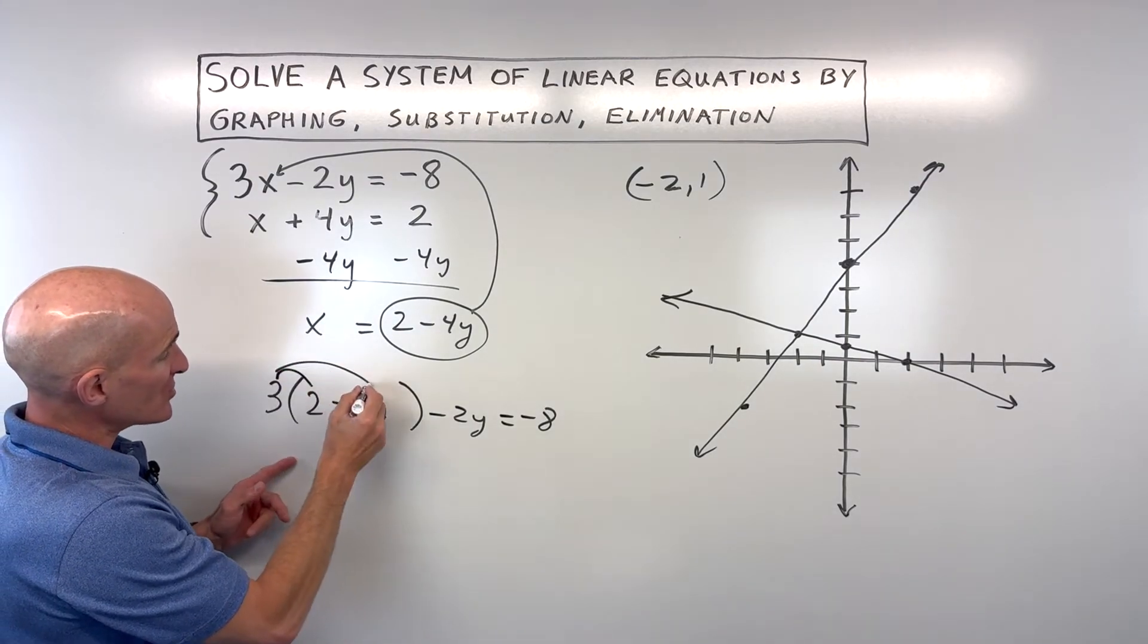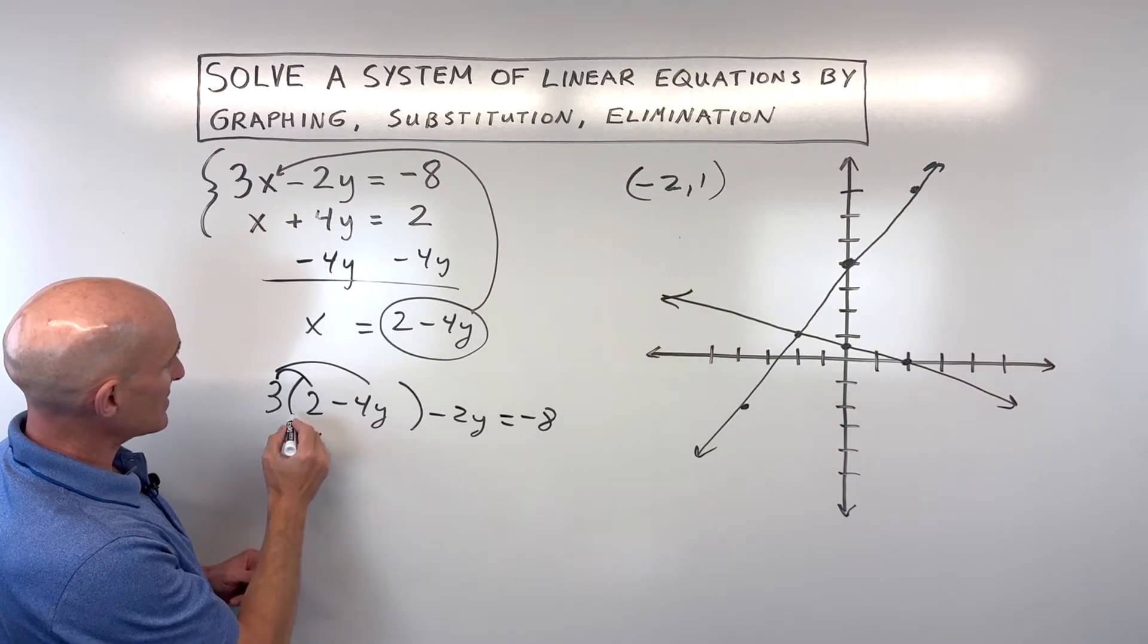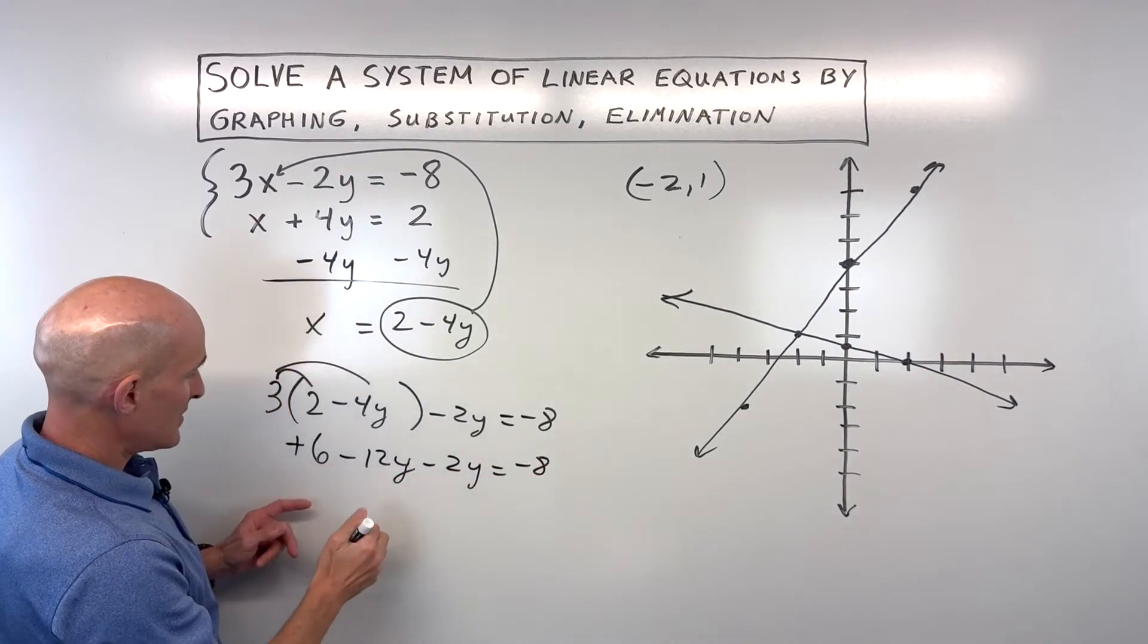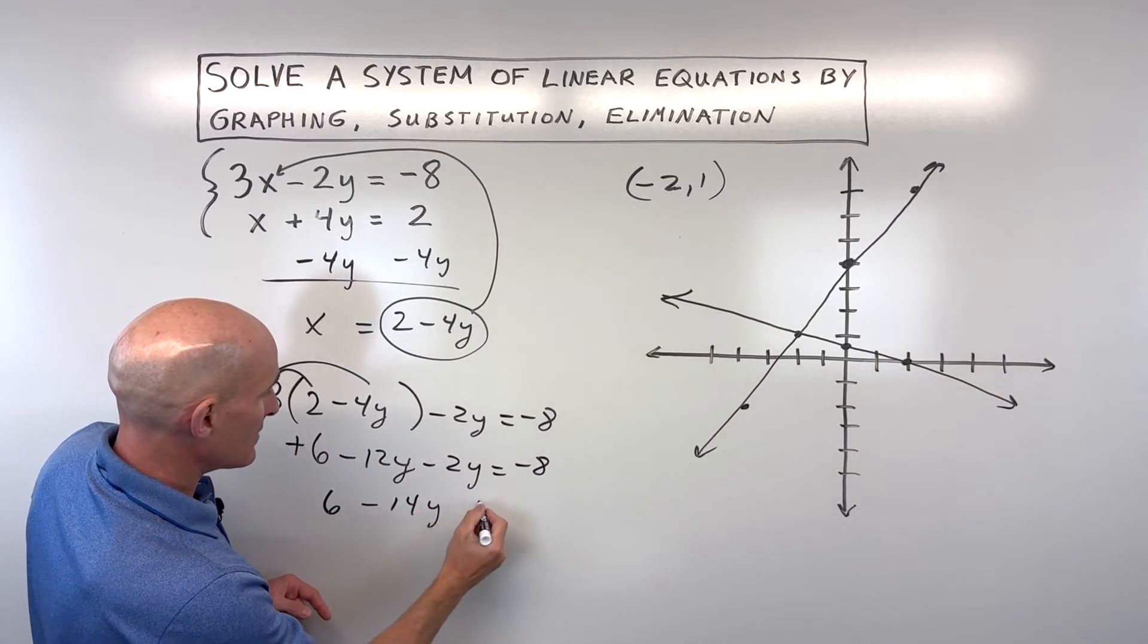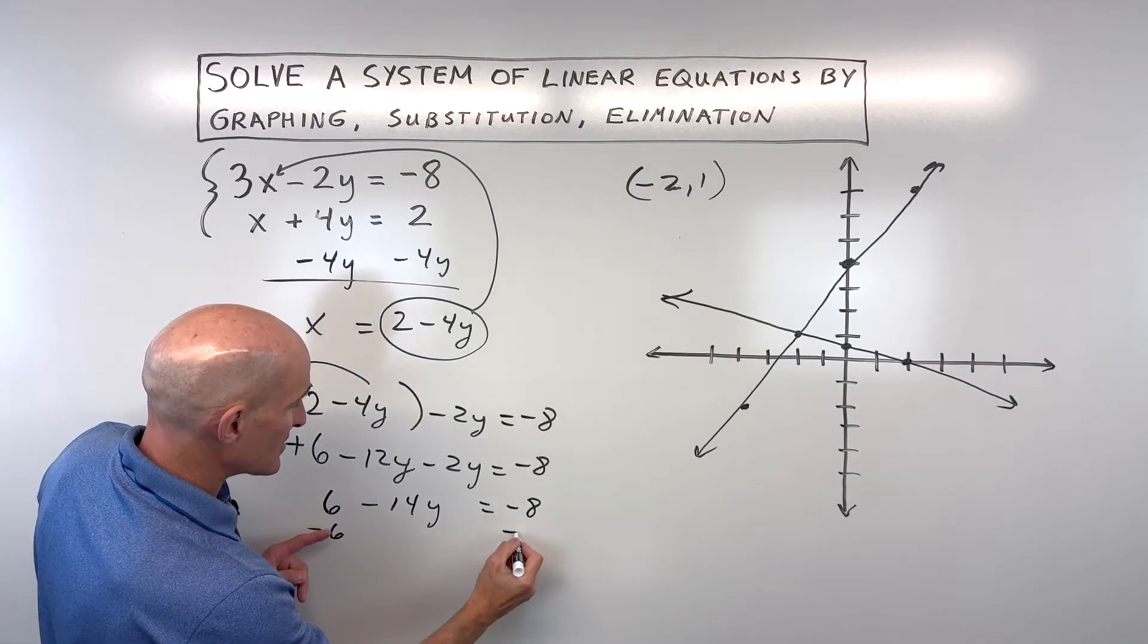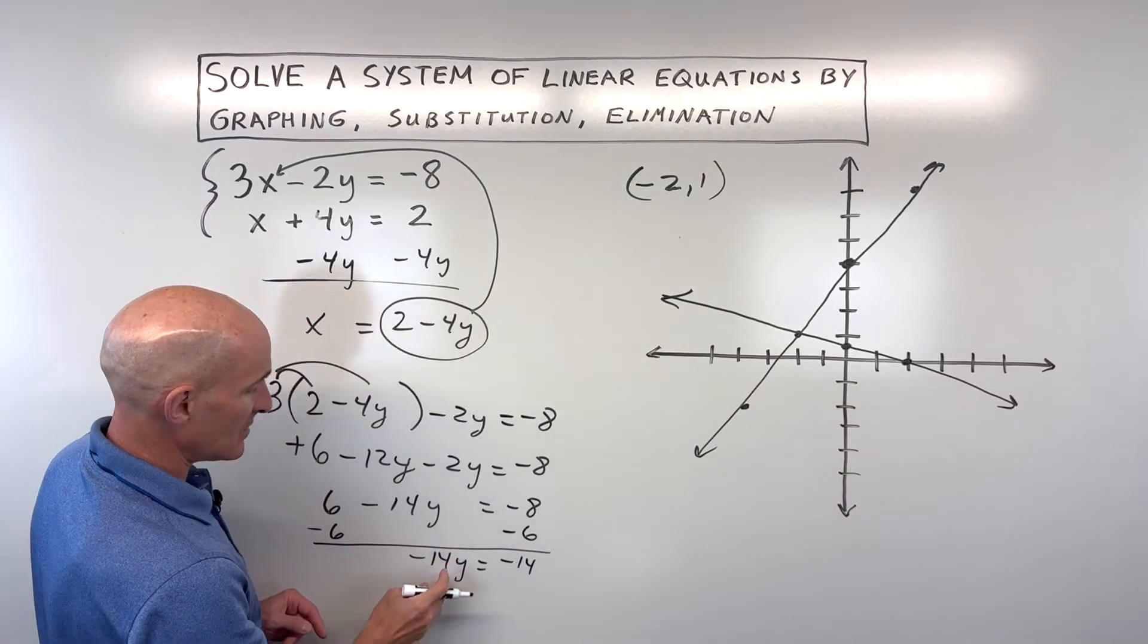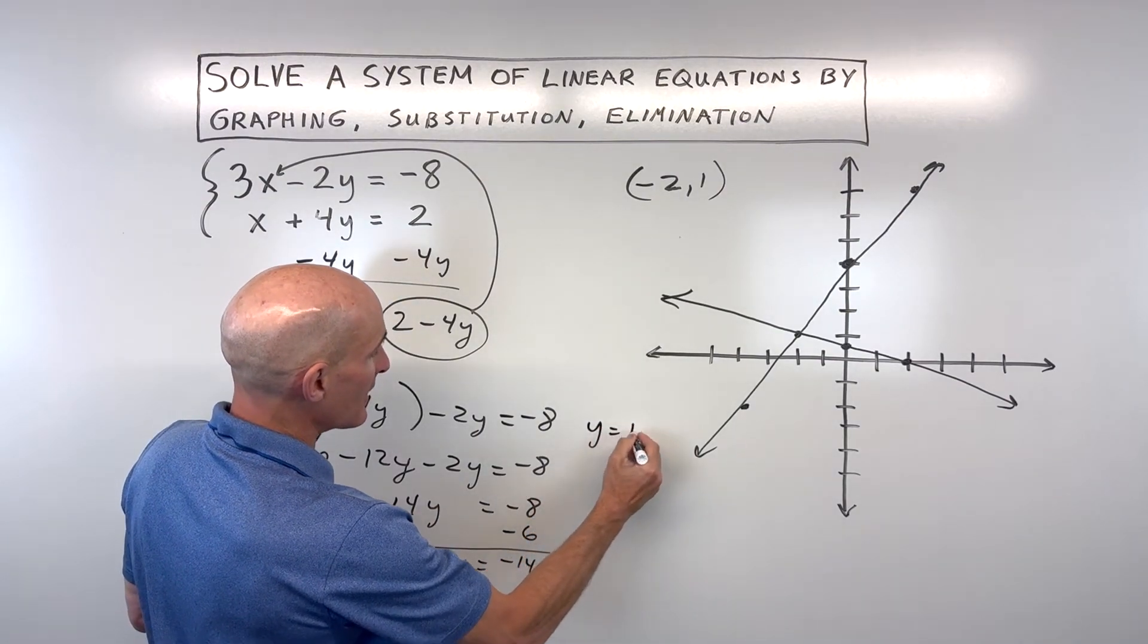Okay, now we're going to distribute and just simplify and solve. So, we have 3 times 2, which is a positive 6. 3 times negative 4y is negative 12y. Minus 2y equals negative 8. Let's see, combining like terms, we get 6 minus 14y is equal to negative 8. Let's get the variables on one side, numbers on the other. So, subtract 6 from both sides. So, we have negative 14y equals negative 14. Divide both sides by negative 14. And you can see that y is coming out to 1.